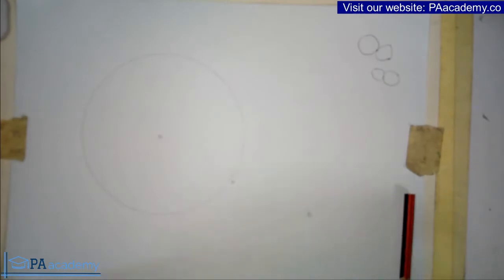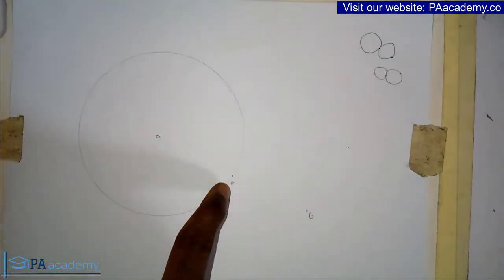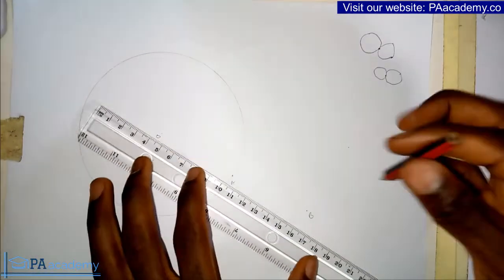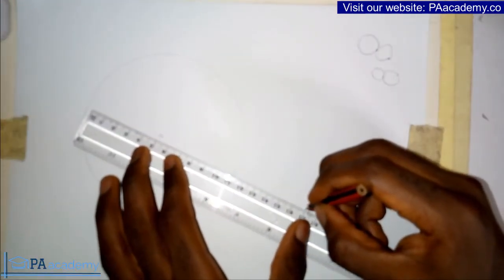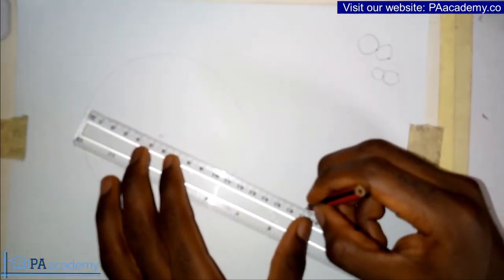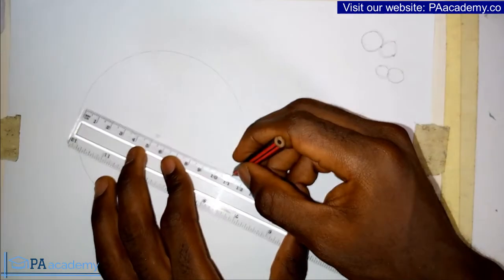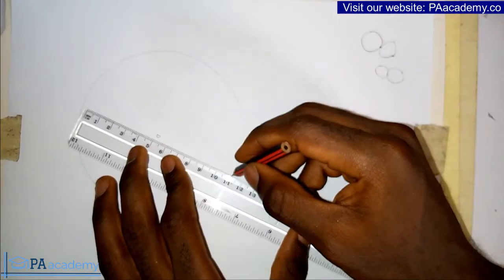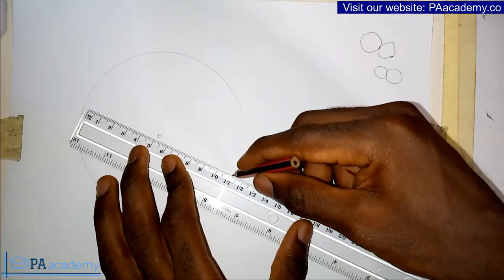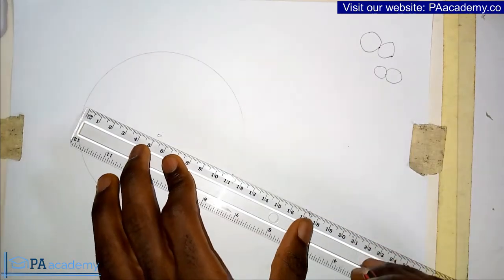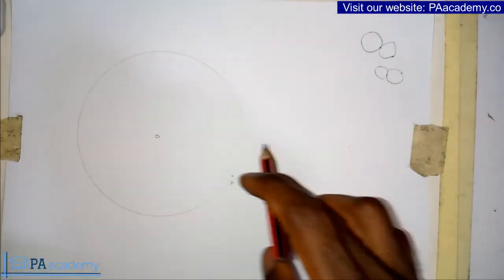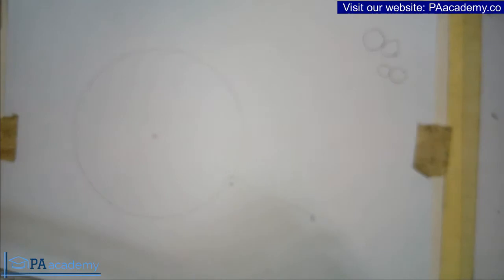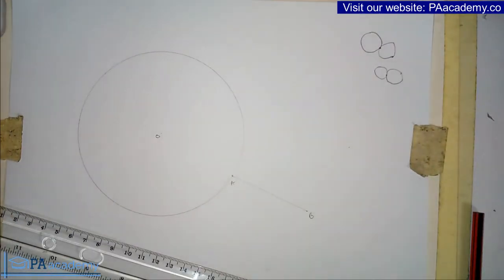What you are going to do in a situation like this is the first thing: join point A and point B together. So you draw a line from point A to point B. We already have line AB.